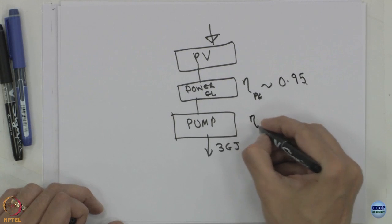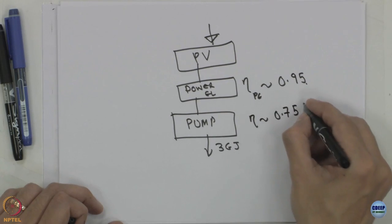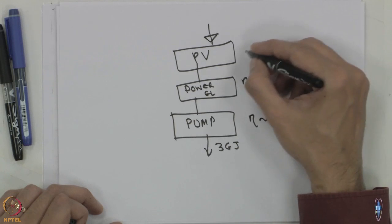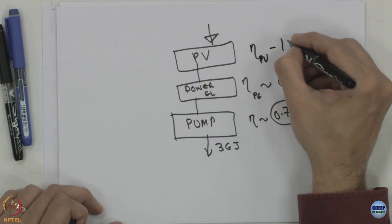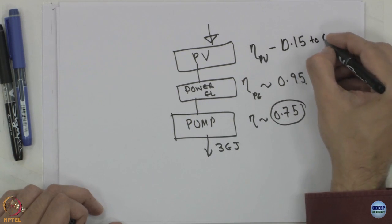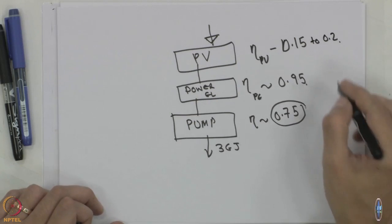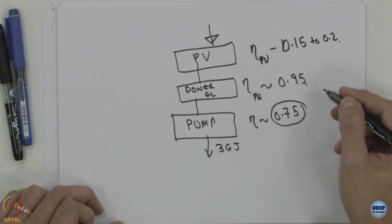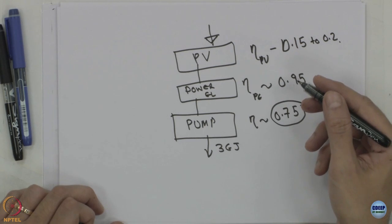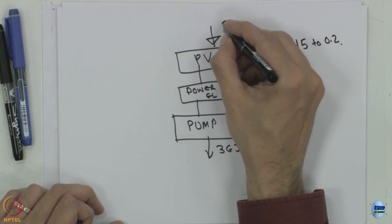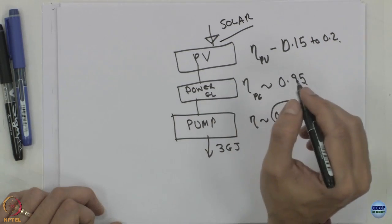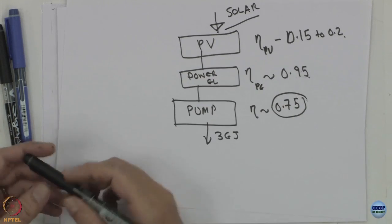In terms of efficiency for the solar PV option, we have the pump, power electronics — which is fairly efficient at around 0.95 or more — and the PV modules. The pump efficiency is 0.75, and PV modules in the field may have efficiencies ranging from 15 to 20 percent. The overall efficiency may be lower than oil-based options, but since solar insolation is free and unconstrained, efficiency may not be the determining criterion.